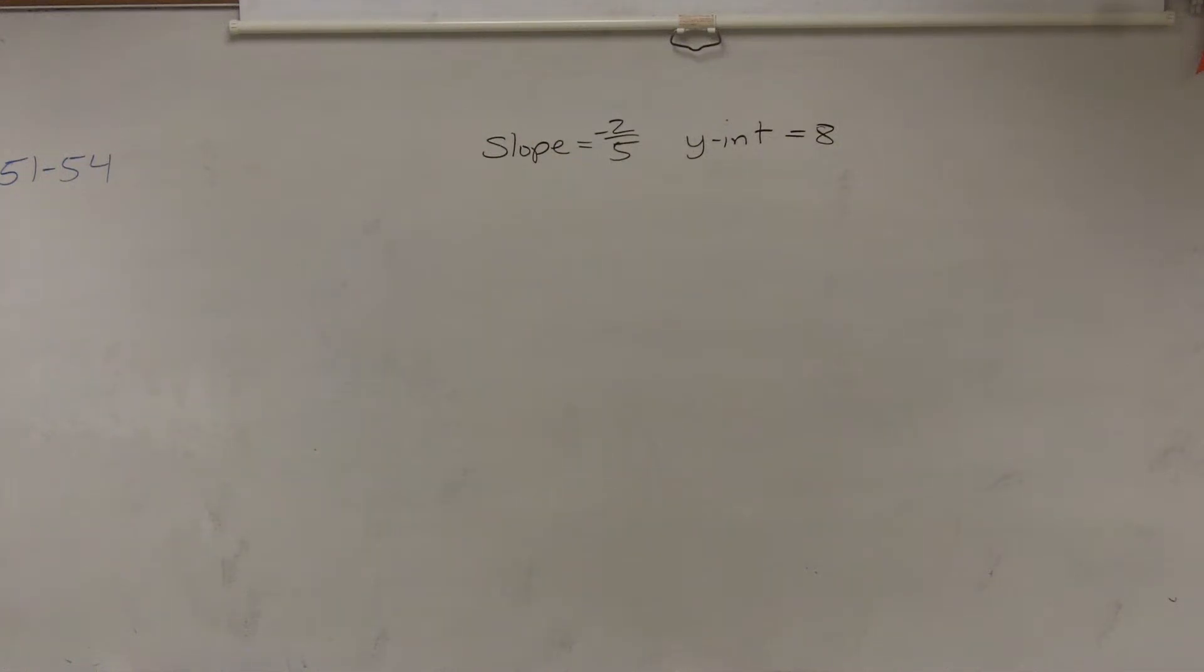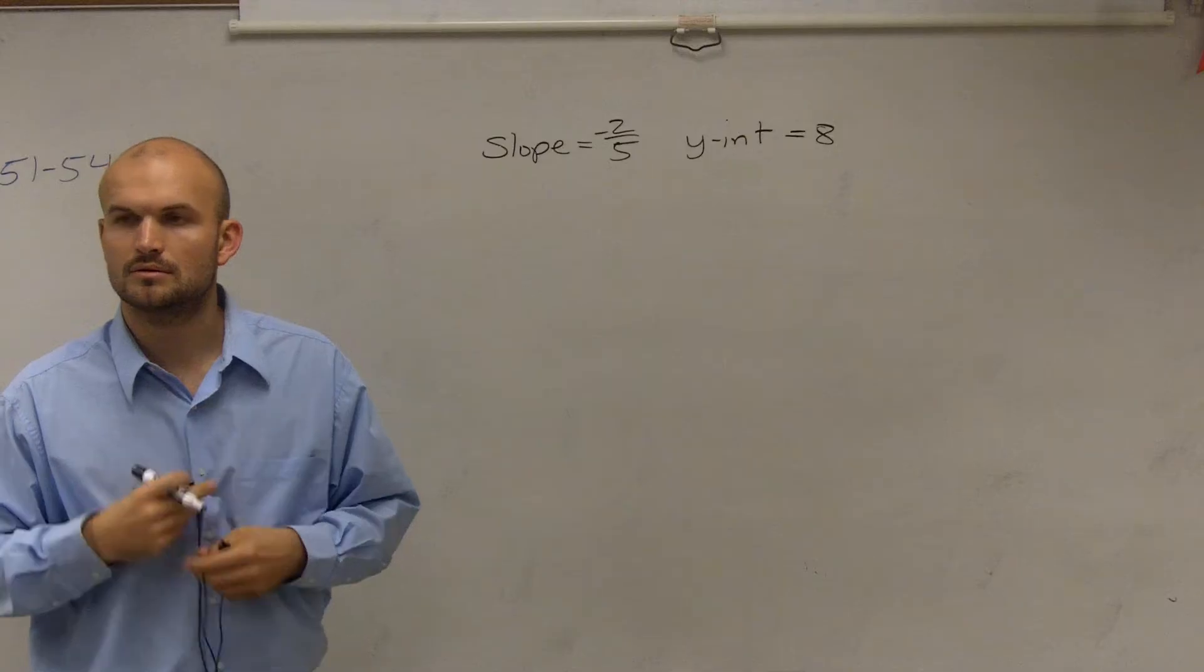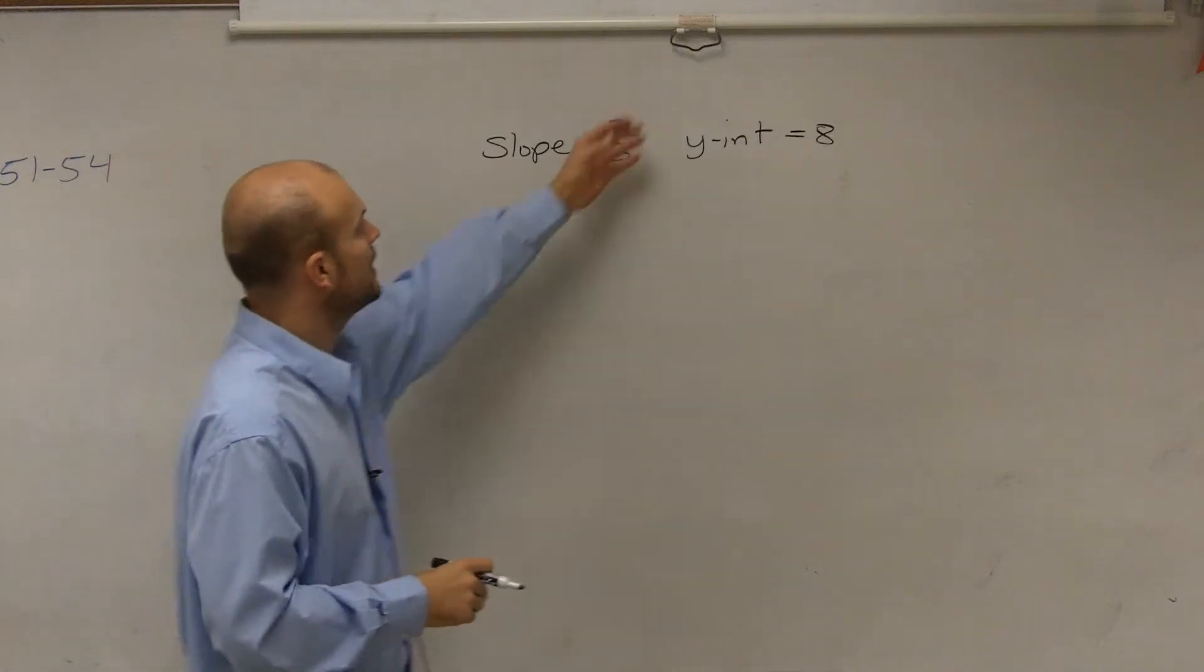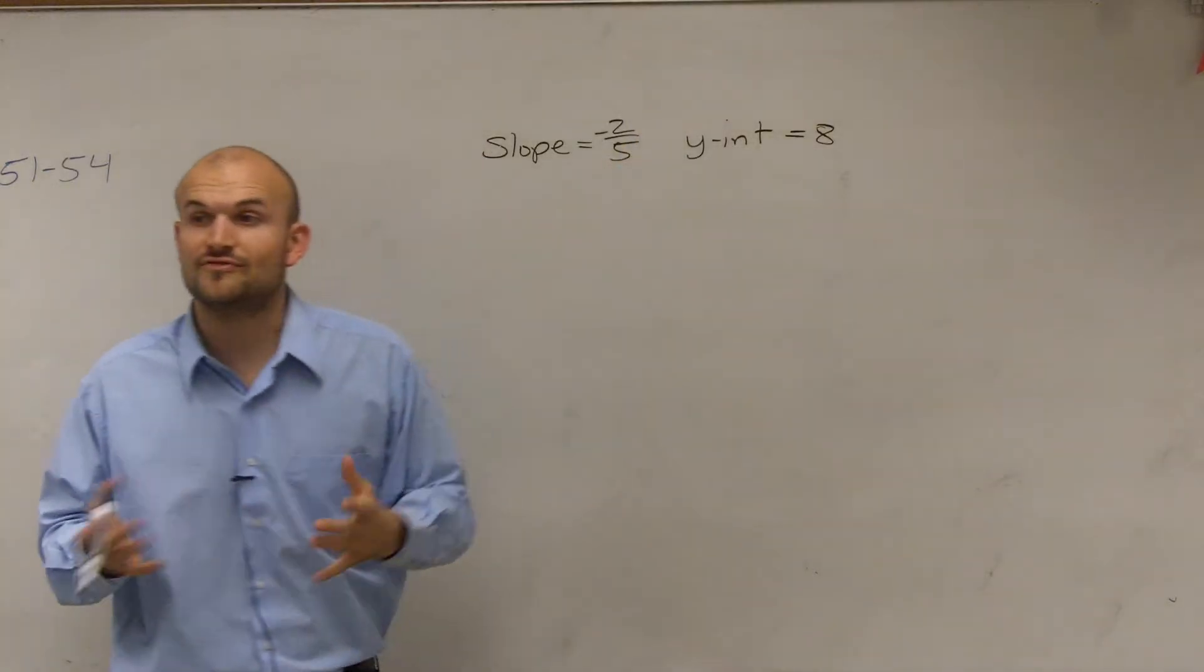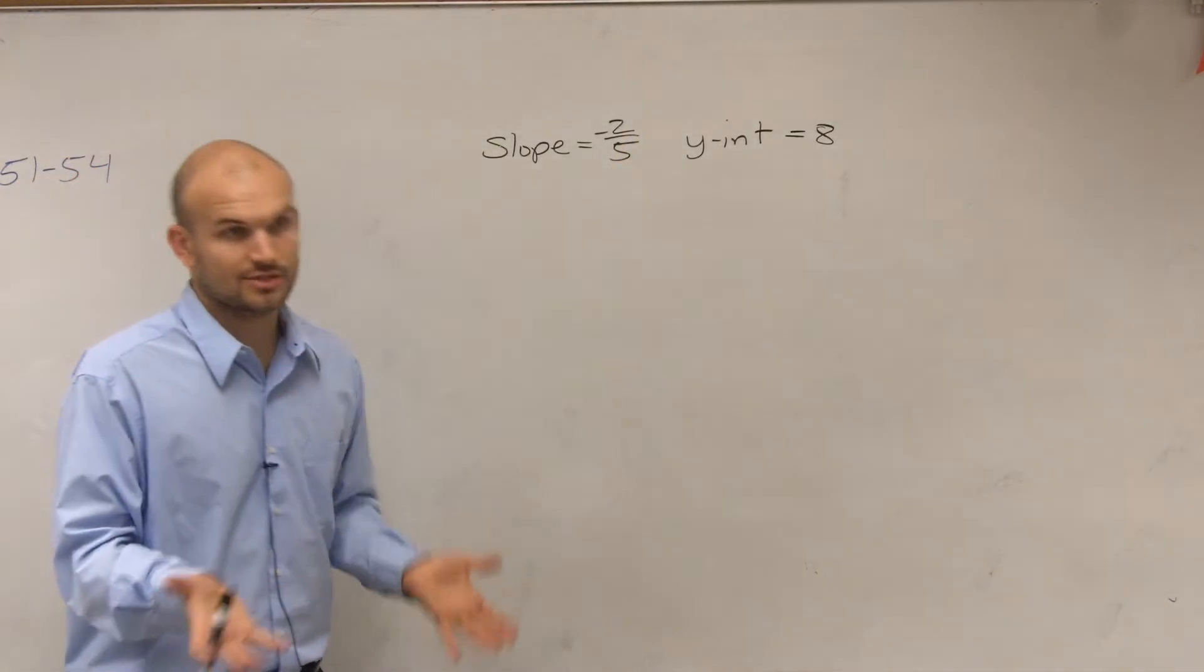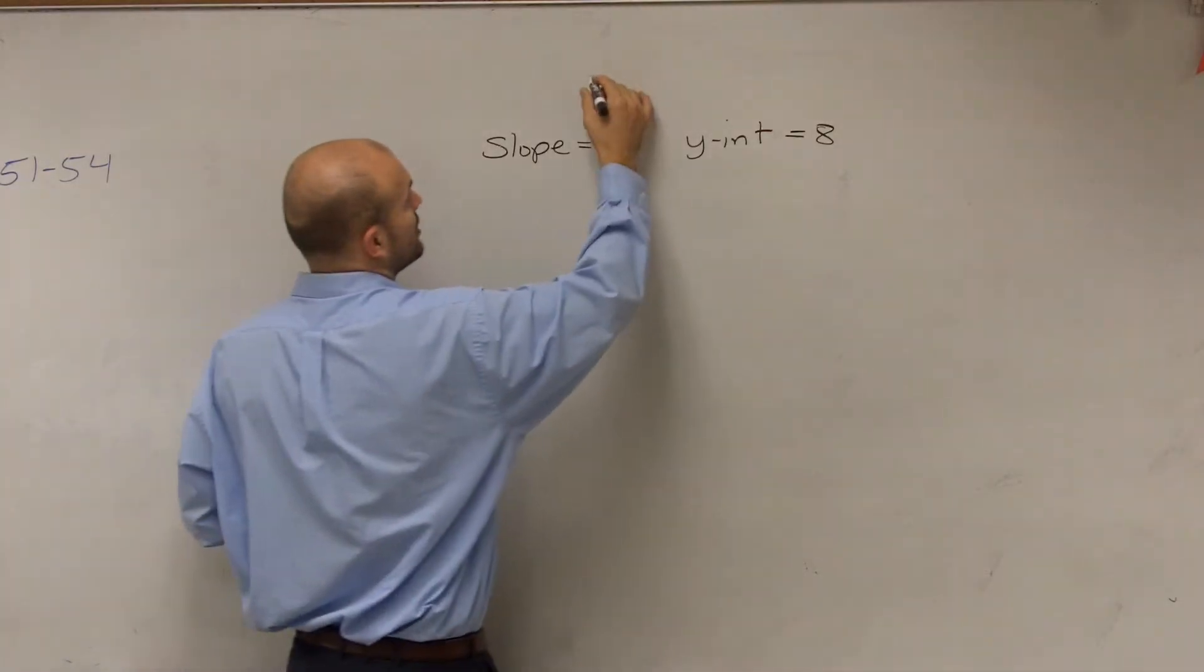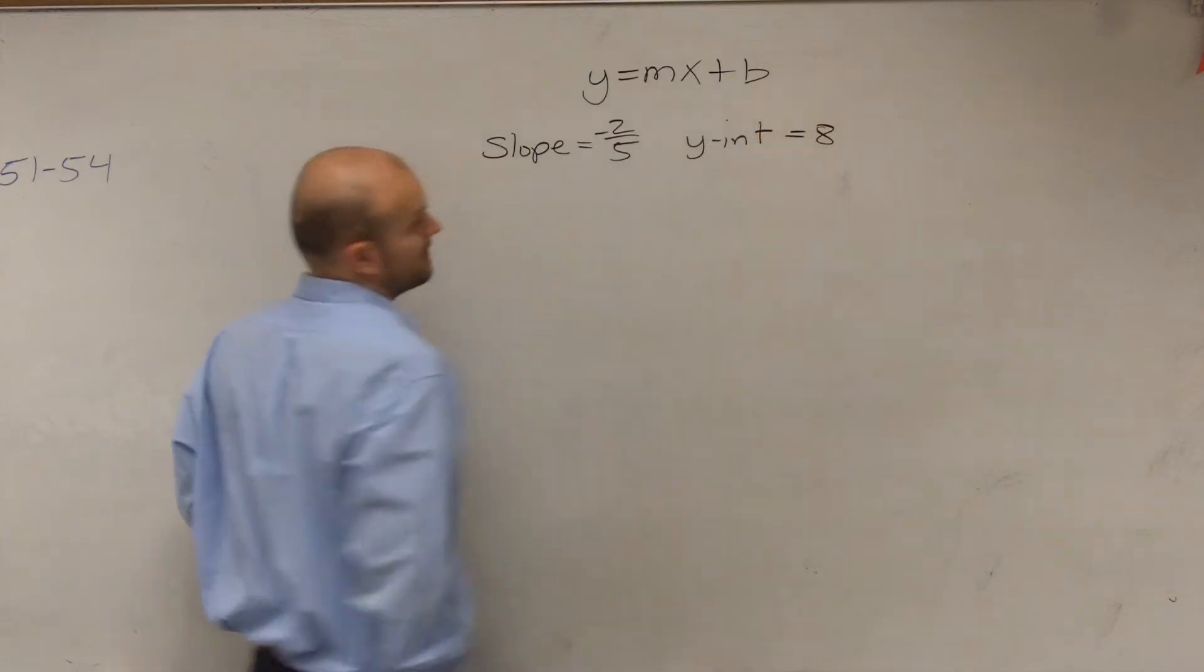All right. Ladies and gentlemen, the question asks us to find the equation of a line in y equals mx plus b form, or in the slope-intercept form. So we know our equation has to be in this form, y equals mx plus b. Right?